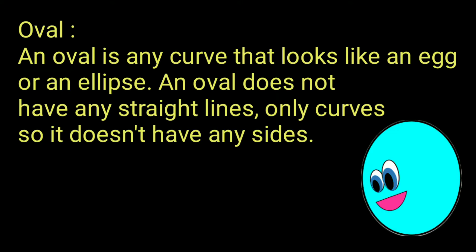Oval: An oval is any curve that looks like an egg or an ellipse. An oval does not have any straight lines, only curves, so it doesn't have any sides.